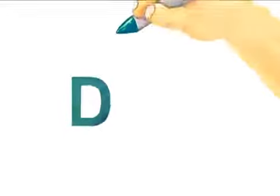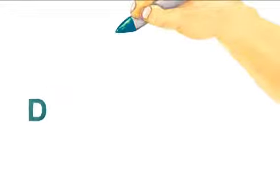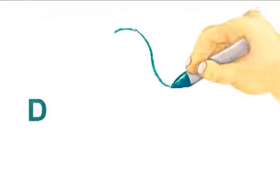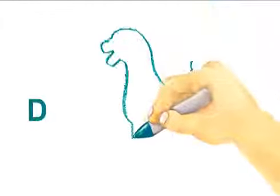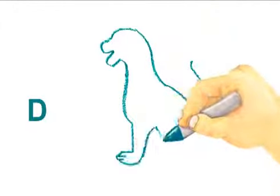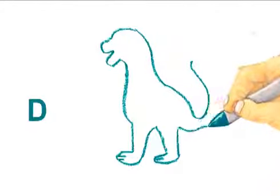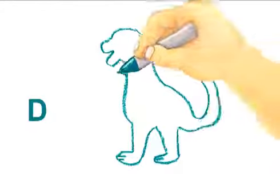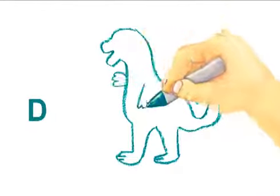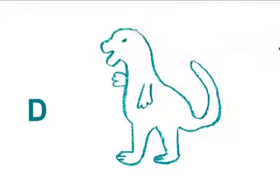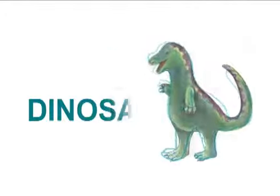Next comes the letter D. Let's draw some animals with names starting with D. What is this? This is a dinosaur.